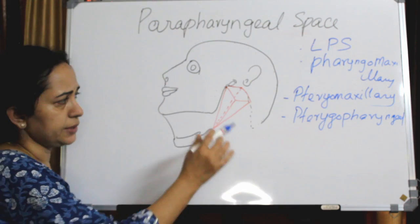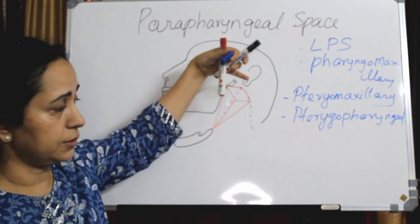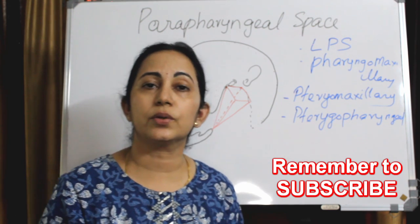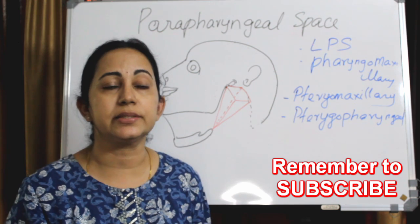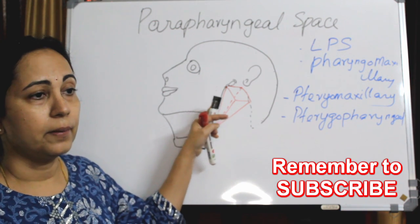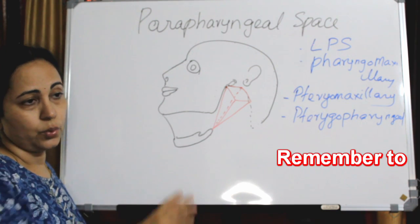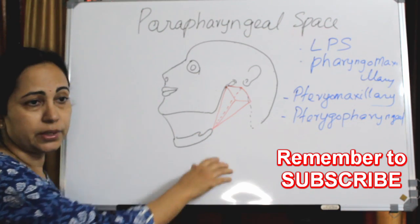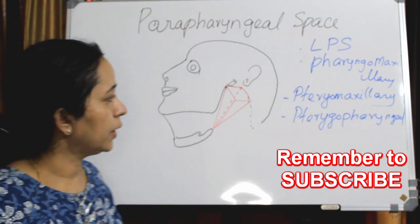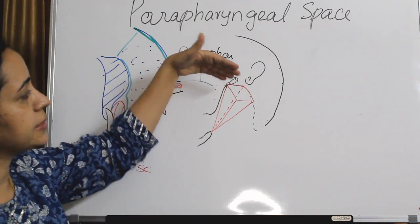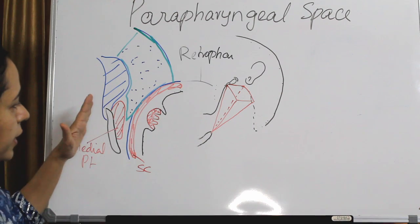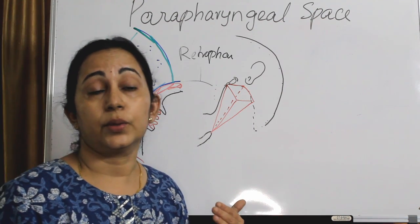Now you know it is an inverted pyramid with the base towards the skull base and the apex towards the greater horn of the hyoid bone. As I explained when discussing peritonsillar space, this parapharyngeal space is lateral to the superior constrictor muscle or the pharyngeal basilar fascia. I will now draw the coronal section.